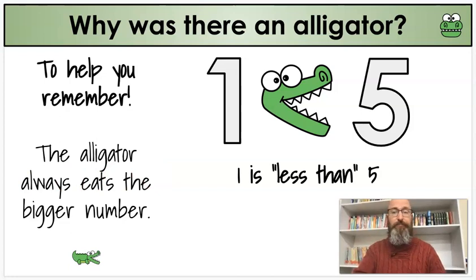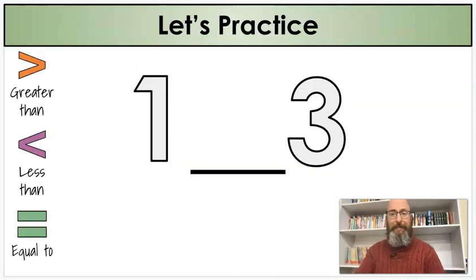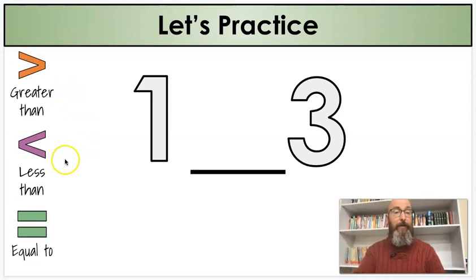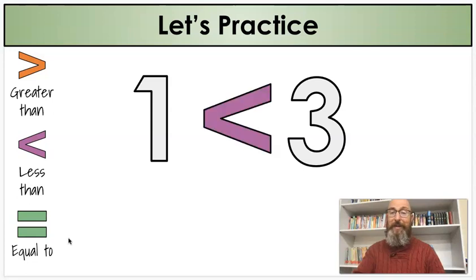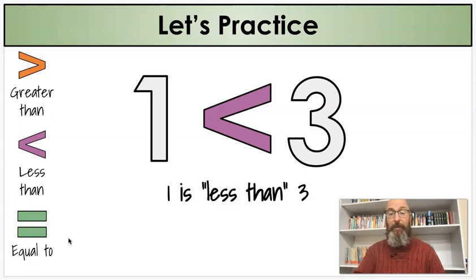So if I'm reading my sentence, one is less than five. It's the same shape as the greater than and less than symbols. Now it's your turn — let's practice. We have a one and a three. Which one do I use? Greater than, less than, or equal to? Is one greater than three? Is one less than three? Or is one equal to three? Of course, you know it is less than, because it is smaller than three. So our sentence would be: one is less than three.